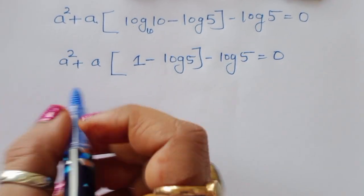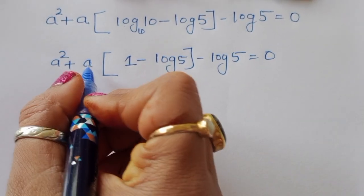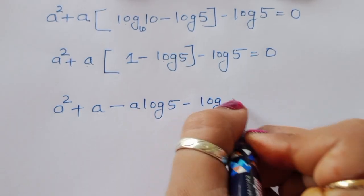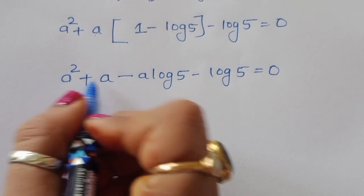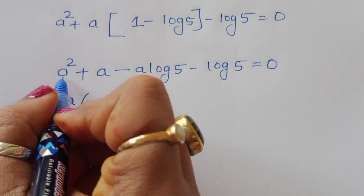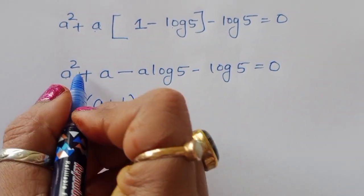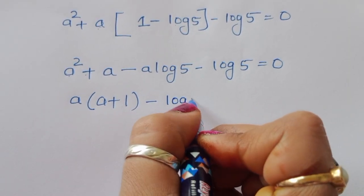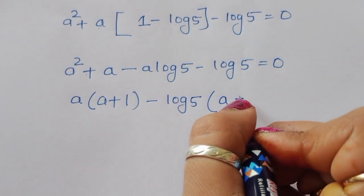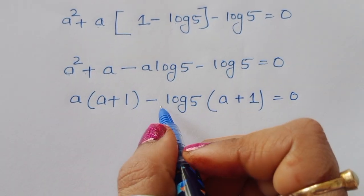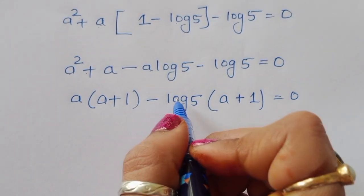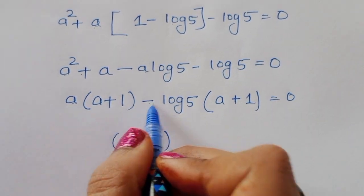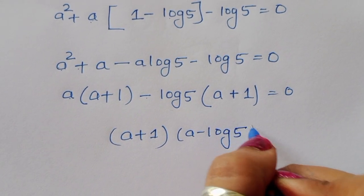This gives us a squared plus a minus a times log(5) minus log(5) equals 0. Taking common factors: (a + 1) times a minus log(5) times (a + 1) equals 0. Factoring out (a + 1): (a + 1)(a minus log(5)) equals 0.